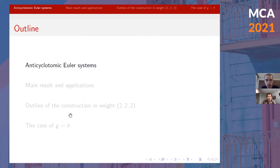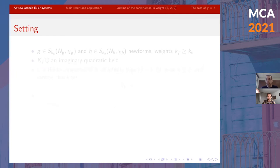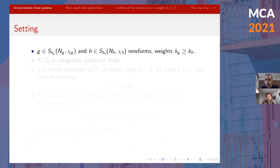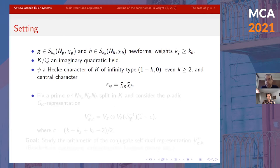Here's a plan for my talk. Let me begin by telling you the setup. We take G and H, two newforms of weights k_G and k_H, and I order them so that G is the one of larger weight. I'm going to take K an imaginary quadratic field, and take Psi to be a Hecke character for K of infinity type (1 minus k) for some even integer k at least two.